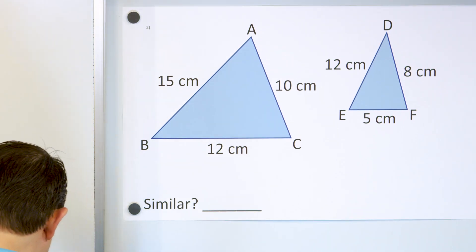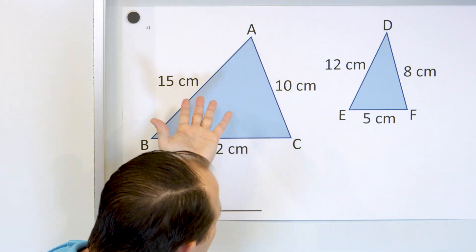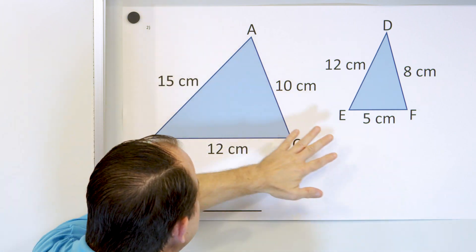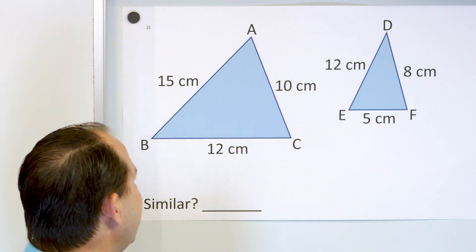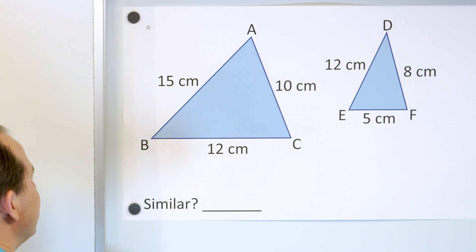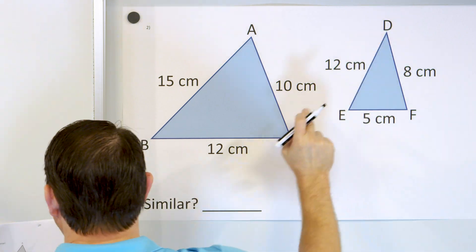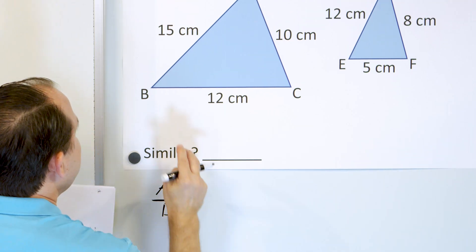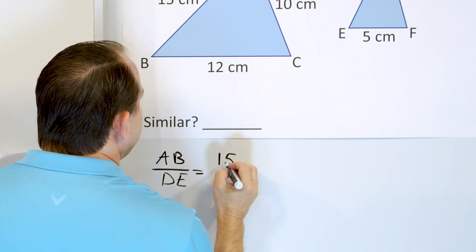Here is problem number two. Let's see if these triangles are similar. They don't really look similar — you could imagine putting one inside the other and it appears to be a different shape altogether. But you can't just look at figures to decide. Let's compare AB to DE: AB is 15 and DE is 12, giving us the ratio 15 over 12.